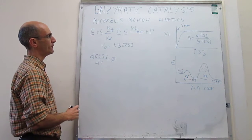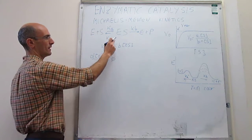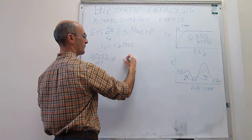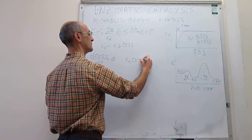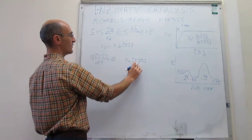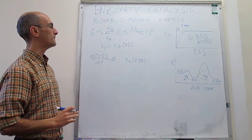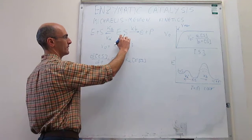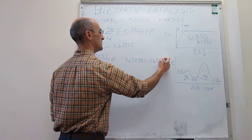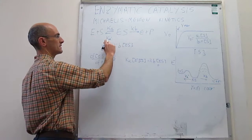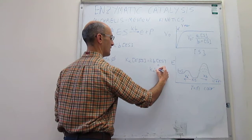What are the reactions that remove ES from the reaction mixture? One removal reaction has rate k_B [ES], and then ES can also back-dissociate to E plus S with rate k_A' [ES]. Setting formation equal to removal: k_A [E][S] = k_B [ES] + k_A' [ES].